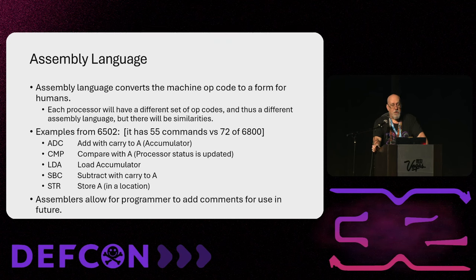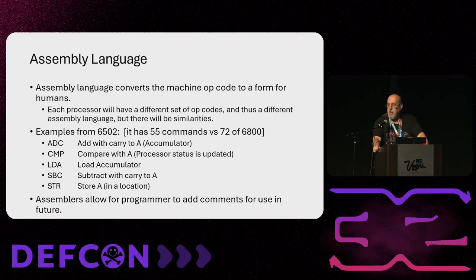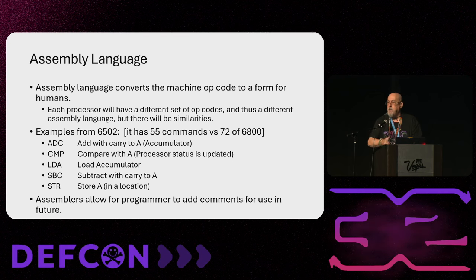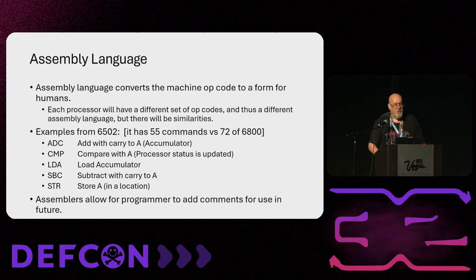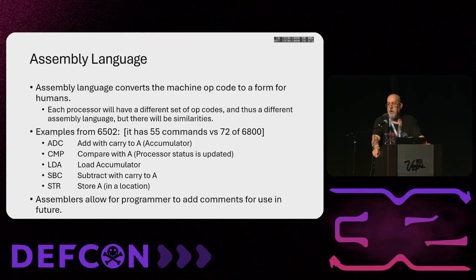This is what 6502 assembly looks like — three-letter coding. Some examples: ADC (add with carry), the compare instruction, LDA (load the accumulator) — meaning you're grabbing a number out of memory and pulling it into the accumulator so you can do math on it. The 6502 has only two math commands: it can add, and it can subtract. That's it. If you want to multiply or divide, you're going to have to use add and subtract. And of course if you have any sense, you'll comment your code — otherwise we'll look at your assembly and have no idea what you're doing.